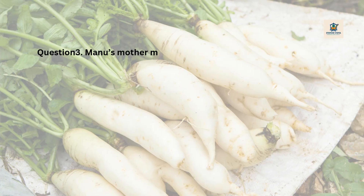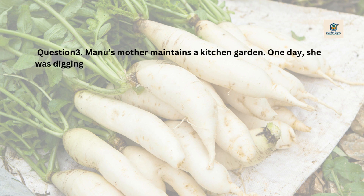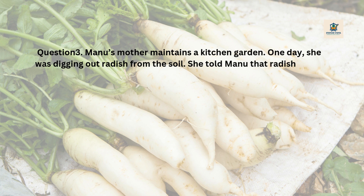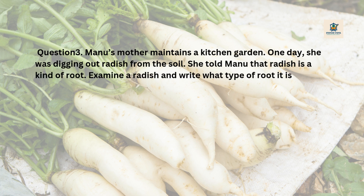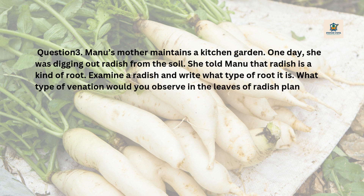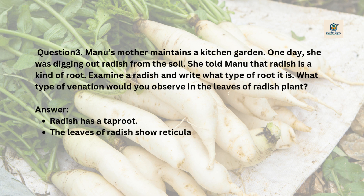Question 3: Manu's mother maintains a kitchen garden. One day she was digging out radish from the soil and told Manu that radish is a kind of root. Examine a radish and write what type of root it is. What type of venation would you observe in the leaves of the radish plant? Answer: Radish has a taproot. The leaves of radish show reticulate venation.